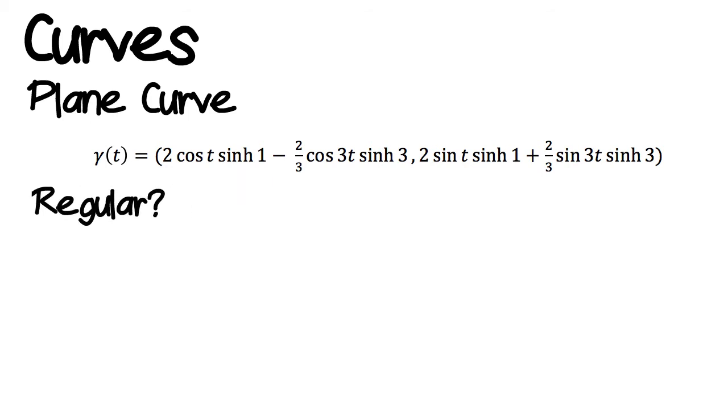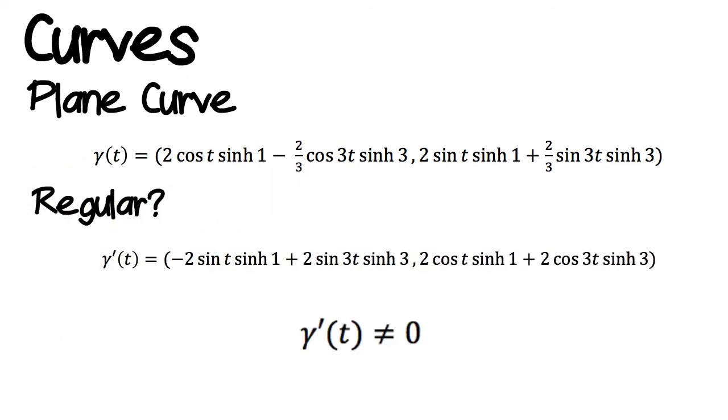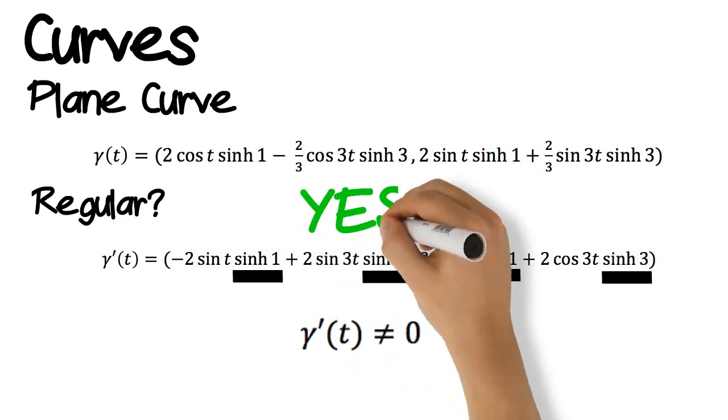From the equation of a plane curve, we can gather a lot of different information about its properties. Today, we are going to be looking at the plane curve, gamma. The first thing we can check is if our curve is regular. What we mean by that is the derivative of the curve ever equals zero for any value of t. In this case, gamma prime or the derivative is never equal to zero as it contains constants that are greater than zero. Hence, we can say that this curve is regular.